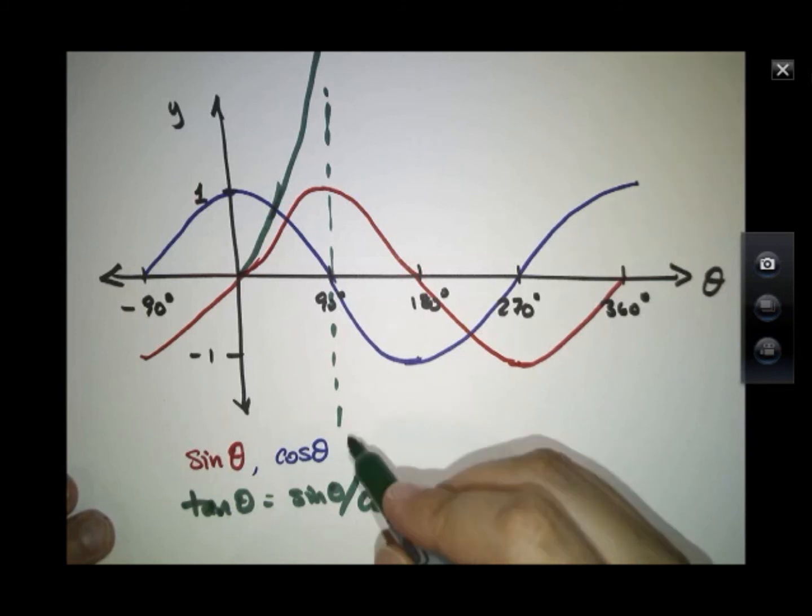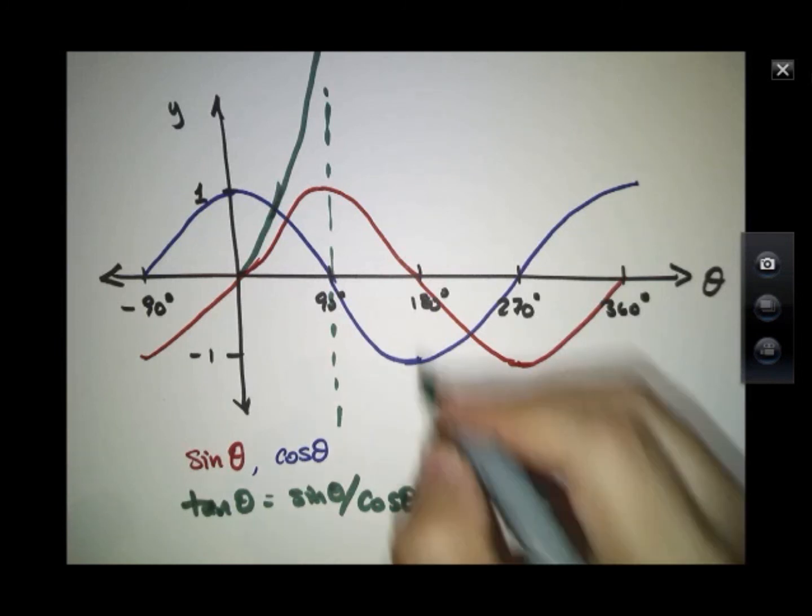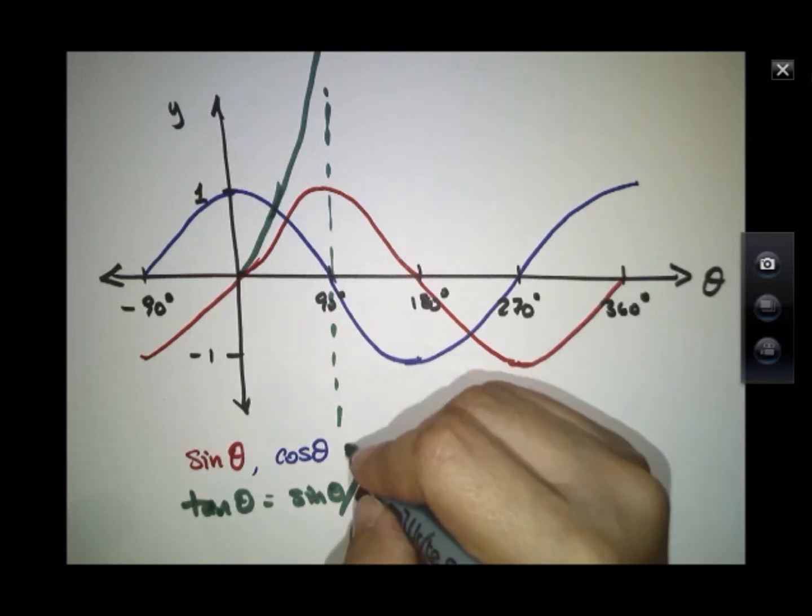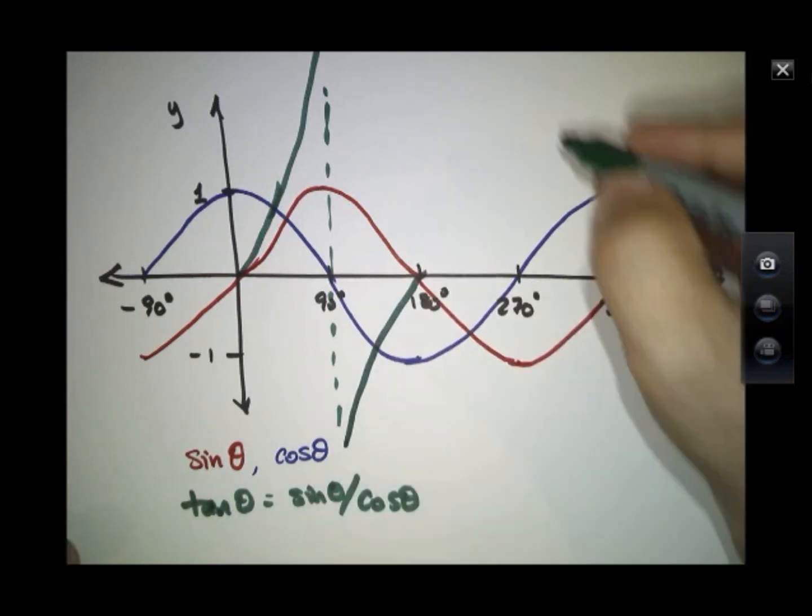At 91 degrees, the sine of theta is still pretty close to one. The cosine is very small, but it's a negative number because I'm over in what's called the second quadrant. And the graph looks like that.